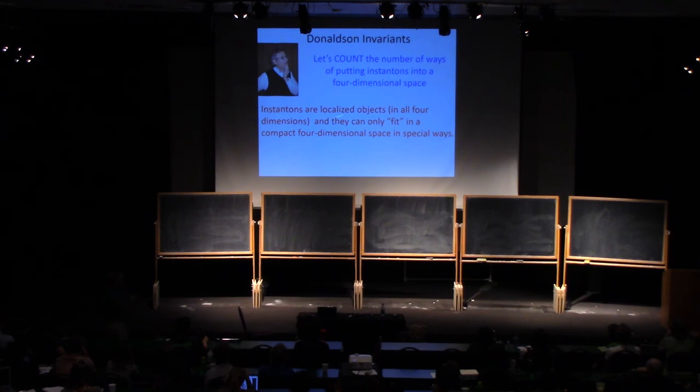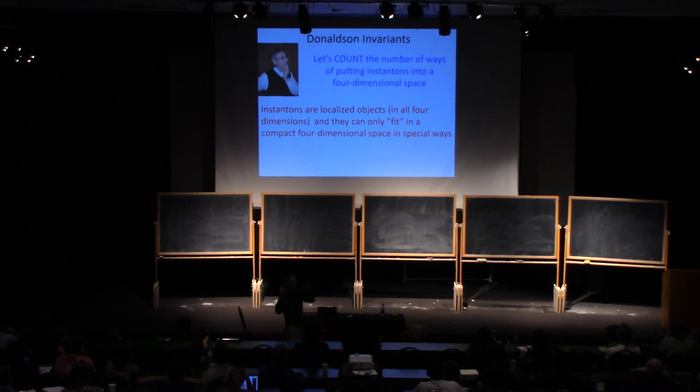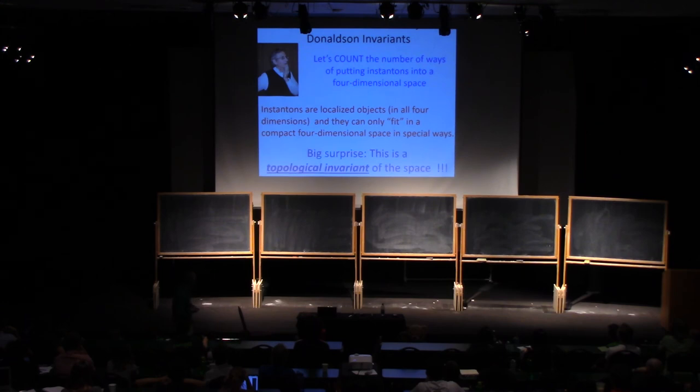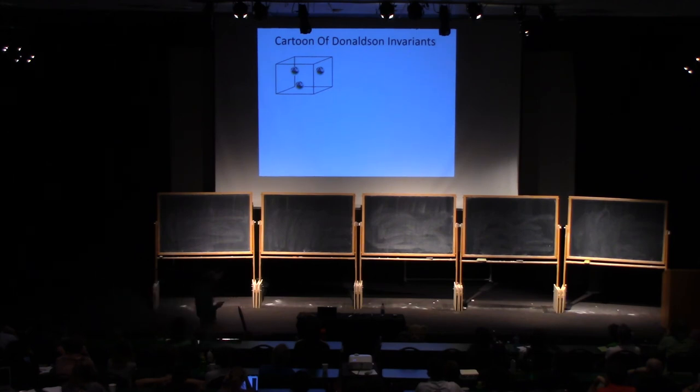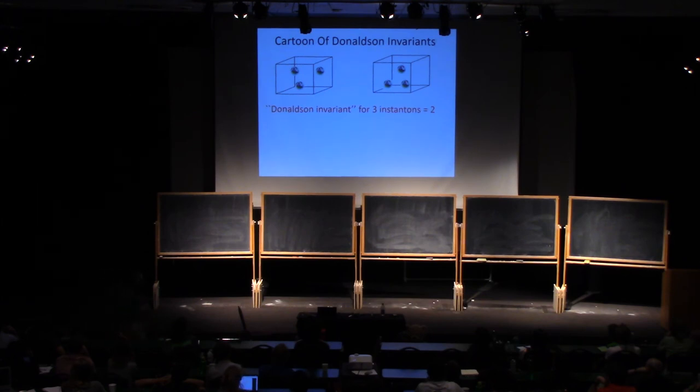Instantons are localized objects, and the Yang-Mills equations being nonlinear are very fussy, so you can only put a certain number of instantons into a four-dimensional compact space in special ways. The remarkable surprise was that this is a topological invariant of the space. Let me try and illustrate that. I can't draw four dimensions for you, so let's go back to that cube where we identify the opposite ends and think of the instantons as little marbles. Supposing we take three instantons, we try to put it into this cube. There might be one way, but because the Yang-Mills equations are fussy, there only will be one other way of doing it, and so we would then say that the Donaldson invariant for three instantons